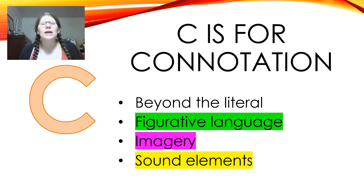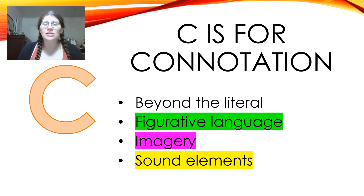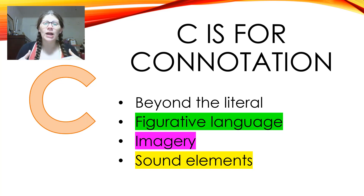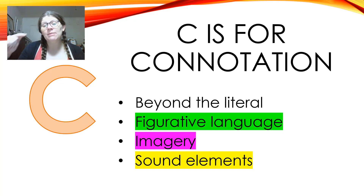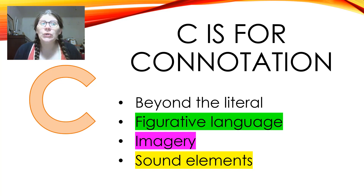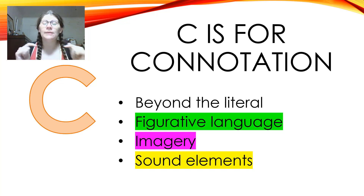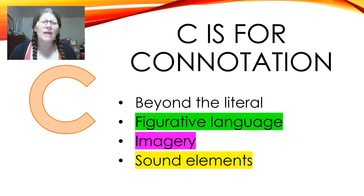Then you have sound elements. Sound elements include things like alliteration — 'Peter Piper picked a peck of pickled peppers' — that's the repetition of consonant sounds at the beginning of words. Sound elements also include rhyme and rhyme schemes, so you might have an internal rhyme like 'ever dissever,' or an end rhyme where the end of the line rhymes like in a song. Other sound elements include assonance, which is the repetition of vowel sounds within the middle of words — 'out and about' would be an example.